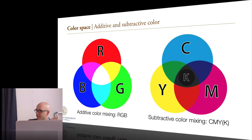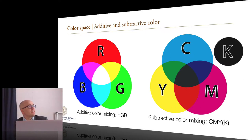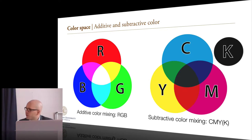CMYK is important to know because that's the color space where your publications will be printed. Journals always need a copy printed in CMYK, so everything you do will have to be converted into this color space at some point. This is a big deal because it doesn't look as nice and saturated as the RGB color space. On a projector the difference isn't dramatic, but on your computer screen you can get very nice pictures that look dull when printed.